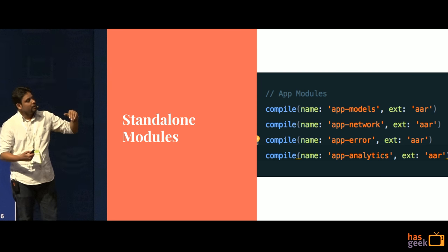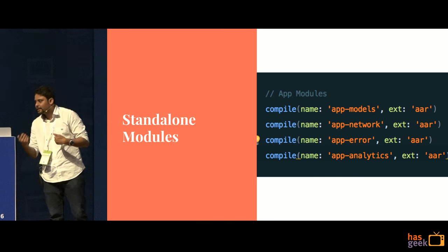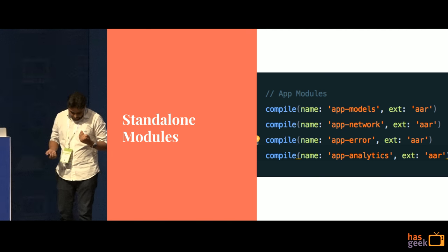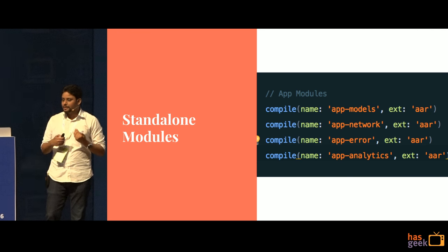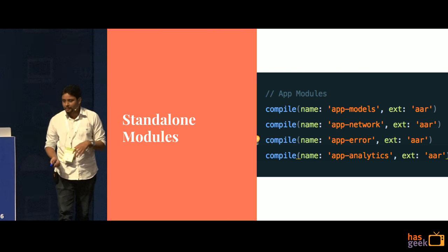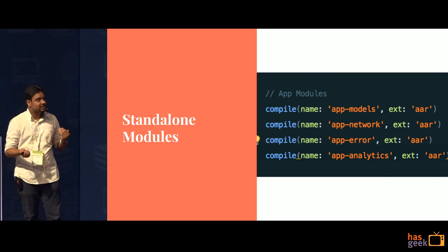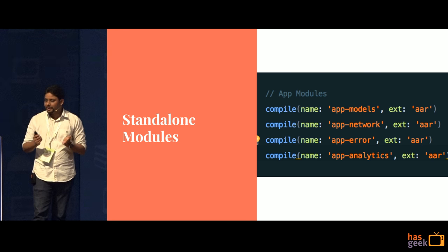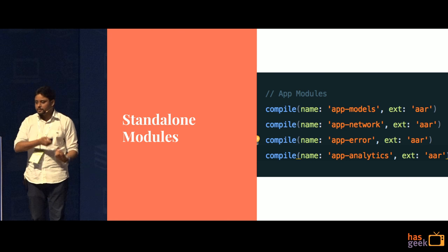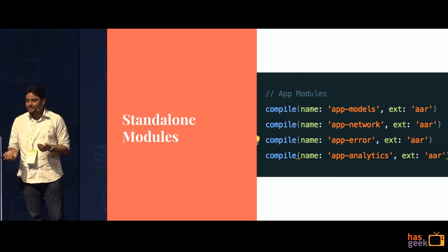Our network, analytics, error model — all of these are separate projects and repositories by themselves. The motivations are two: one, it is easily refactorable — today we use Retrofit as our networking library; tomorrow if you want to use Volley for some reason, it is very simple. The app does not need to change. Some team can independently work on the network module, make those changes, give me a pre-compiled JAR or AAR file, and I just include it.